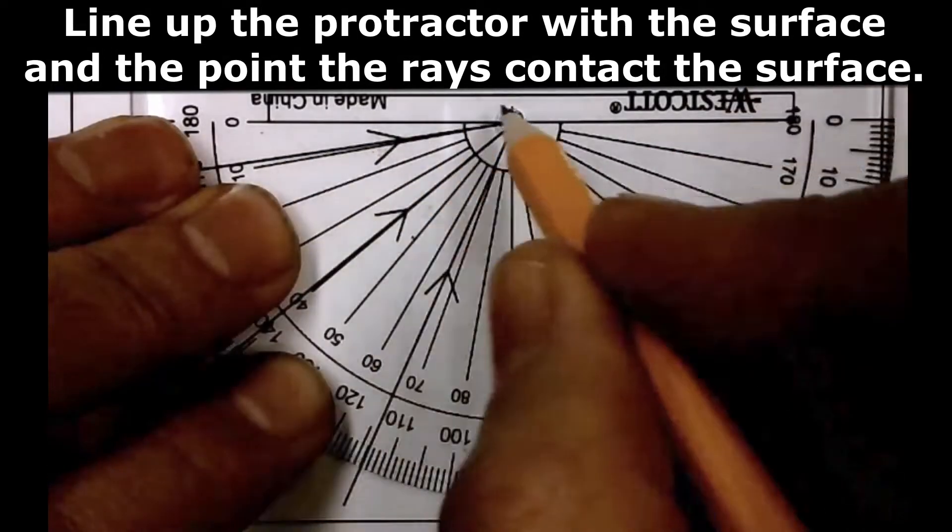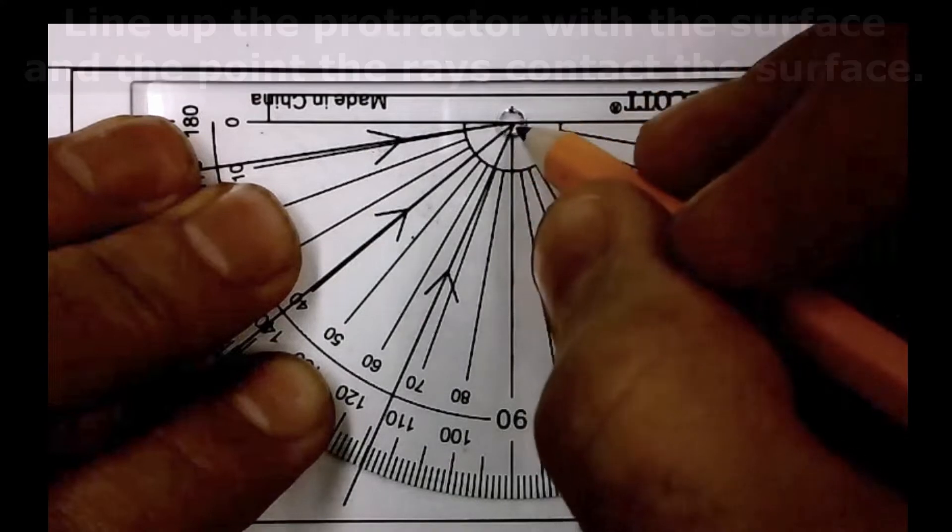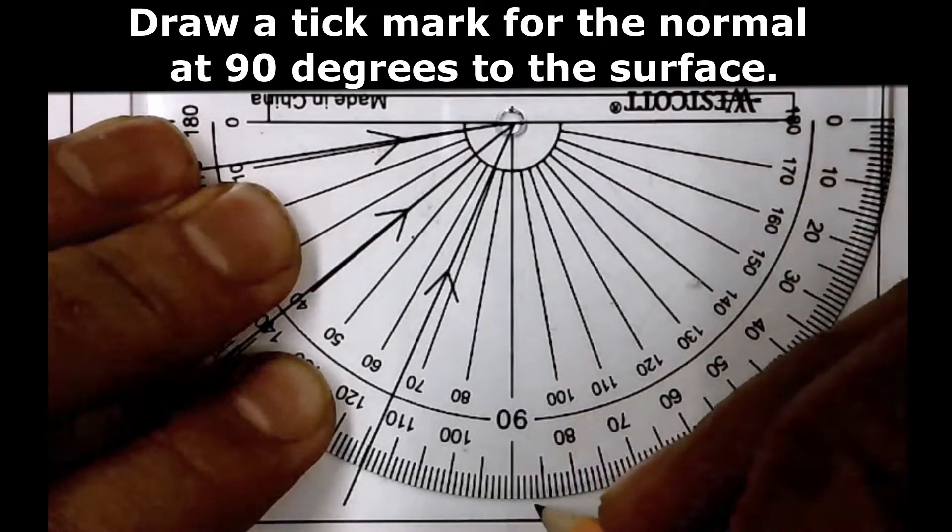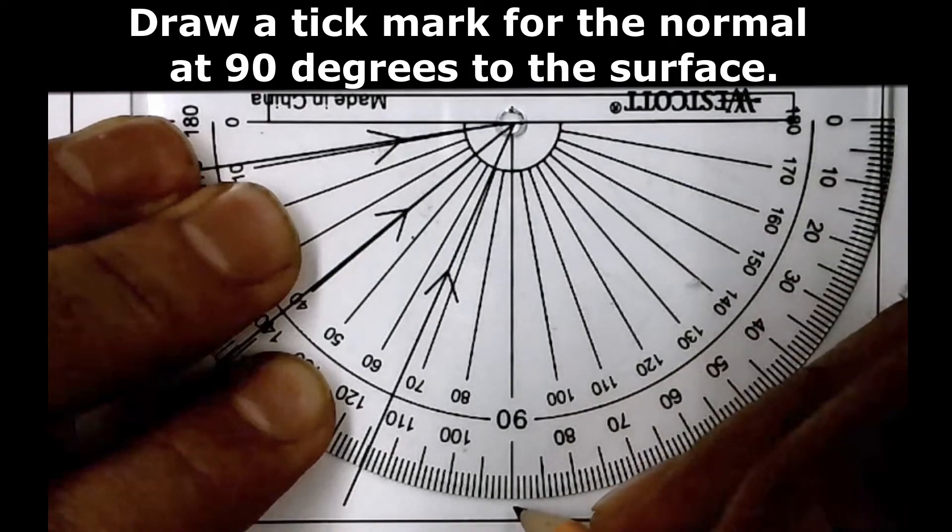Okay, now we have our protractor set up against the surface. It's centered on the rays themselves, and so the normal will be 90 degrees to the surface which will be a line right about here.